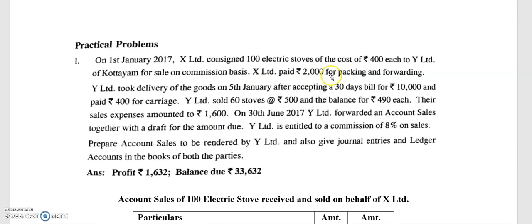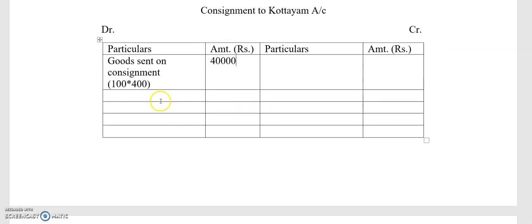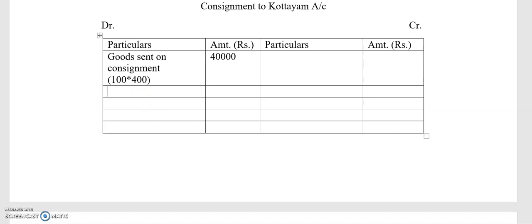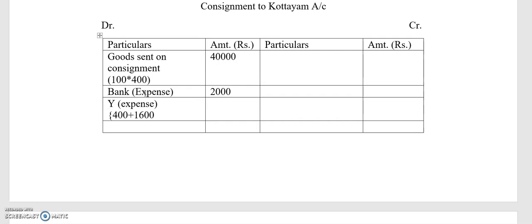X Limited paid ₹2,000 for packing — that is recorded on the debit side as a bank expense. Y Limited incurred carriage and sales expenses. These are nominal accounts and are recorded on the debit side. The consignor expense is recorded as a bank expense for packaging and forwarding amounting to ₹2,000. Y Limited's sales expenses amount to ₹1,600.